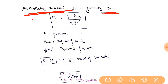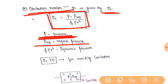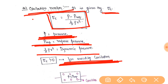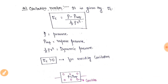There is a cavitation number which we define as sigma-c. Sigma-c is equal to (P - Pv) divided by half rho V squared, where P is the fluid pressure, Pv is vapor pressure, and half rho V squared is dynamic pressure. To avoid cavitation — means to prevent cavity formation — the cavitation number sigma-c must be greater than zero.